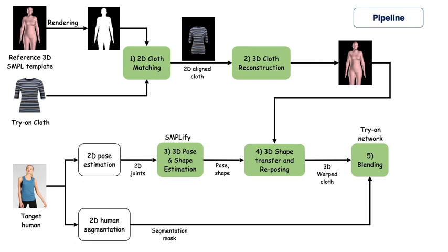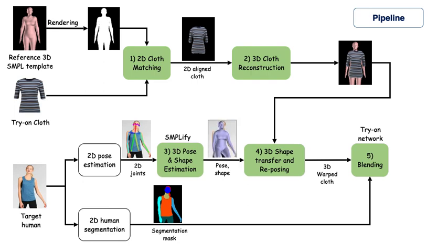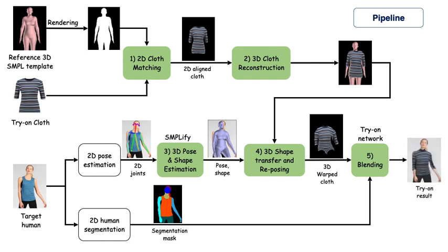We also estimate 3D pose and shape from the target human image. Then we transfer the estimated pose and shape from the target human to the 3D cloth model. Finally, we render the 3D deformed cloth and blend it together with target human properties using the try-on network to generate the try-on result.